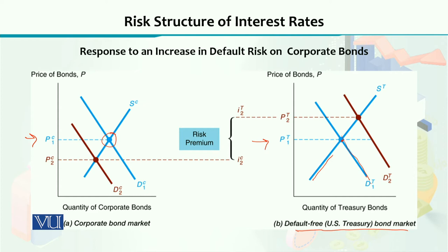Suppose there is some mismanagement news about the corporation whose corporate bonds we are considering, causing panic among investors. Everybody learns that something is wrong with the company and they will not be able to repay the promised interest rate. As a result, this panic and increased default risk causes the demand curve D1C to shift backward. The shifted demand curve is represented by the brown curve, and as a result the equilibrium price falls from P1C to P2C.